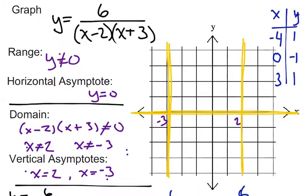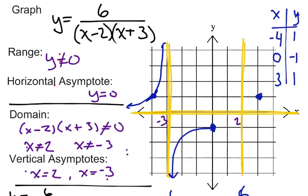And there we have three ordered pairs. We fill them in on a table and start plotting: negative 4 comma 1 is right here; 0 comma negative 1 right here; and 3 comma positive 1 here. Now we know that on each interval, our curve has to go through that point, and then it needs to start getting closer to our asymptotes without crossing them — approaching from both sides on each interval. And that's how we graph when we have multiple vertical asymptotes.